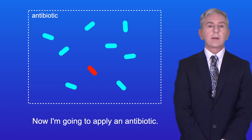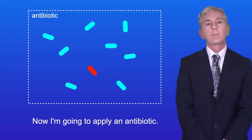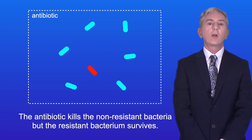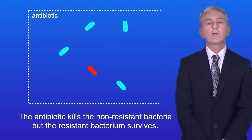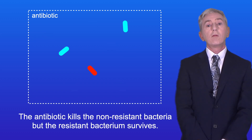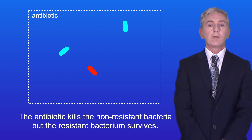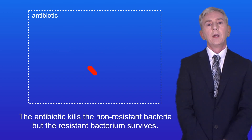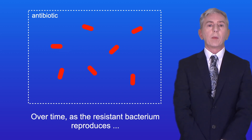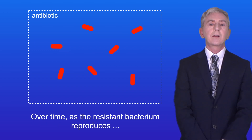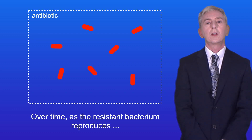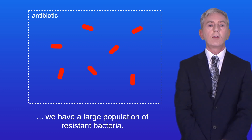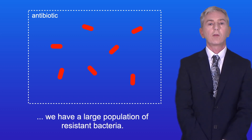When an antibiotic is applied, the antibiotic kills the non-resistant bacteria, but the resistant bacterium survives. Over time, as the resistant bacterium reproduces, we end up with a large population of resistant bacteria.